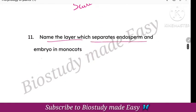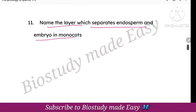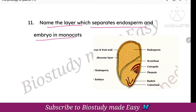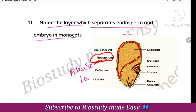Name the layer which separates endosperm and embryo in monocot. You need to know the diagram of monocot seeds. The layer which separates the endosperm and embryo is called the aleurone layer.